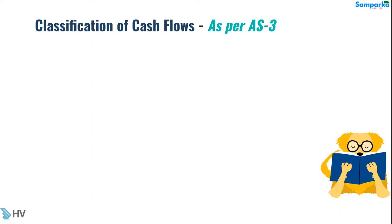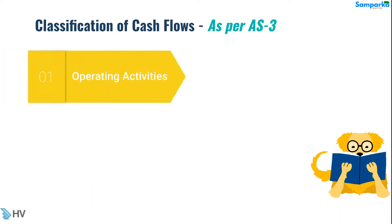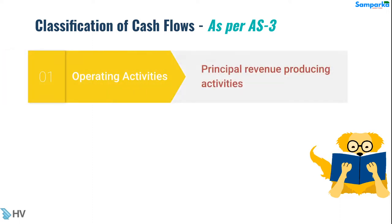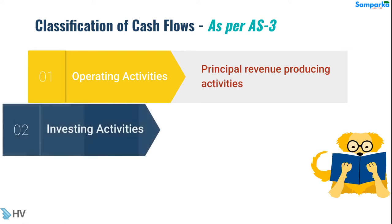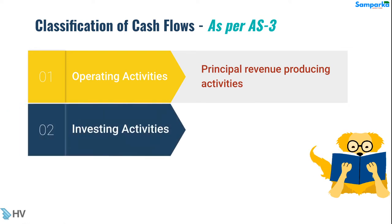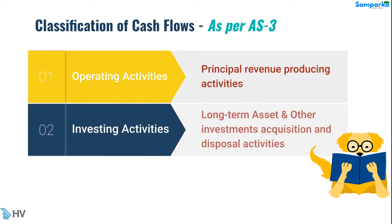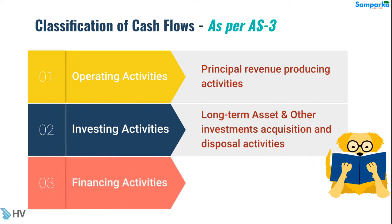Operating activities are the principal revenue-producing activities of an enterprise. Investing activities cover long-term asset and other investments acquisition and disposal activities. Financing activities relate to long-term funds and capital-related activities.